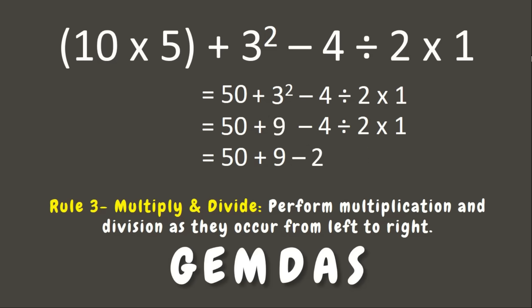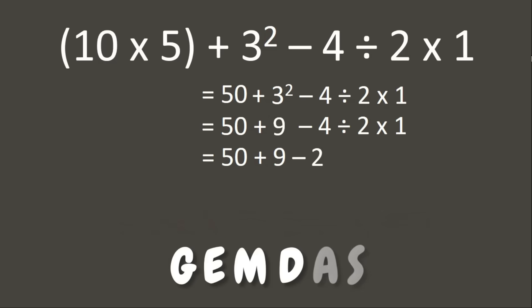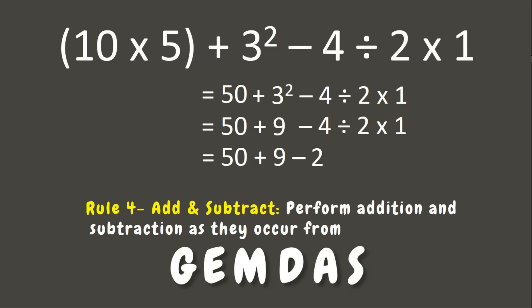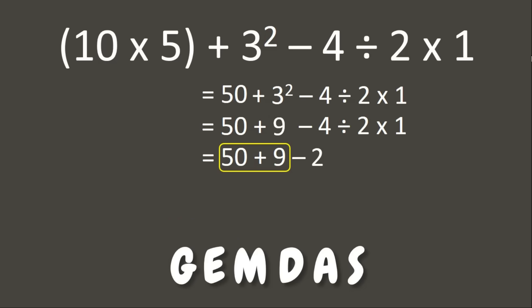Now since there's no more multiplication or division, let's go to our next rule: Addition and Subtraction. We perform them as they occur from left to right. Here, addition comes first before subtraction, so we add first. 50 plus 9 is 59. Now our last operation is subtraction: 59 minus 2 is 57.